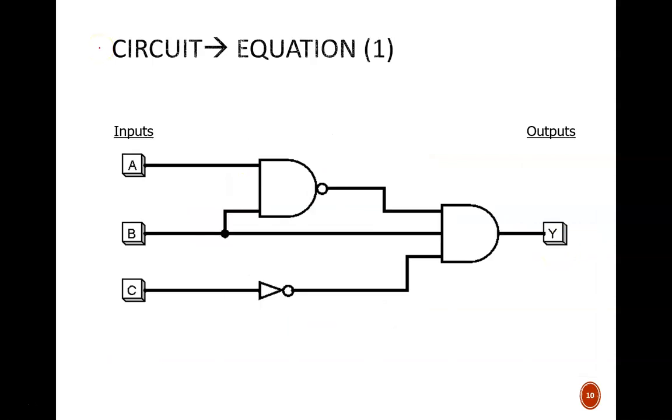So far, this video has exclusively demonstrated working in one direction. Given an equation, draw the circuit. We will conclude with two examples working the other way. Given a circuit, find the equation. The approach is simple. Work left to right and write the Boolean expression for the signals leaving each gate.